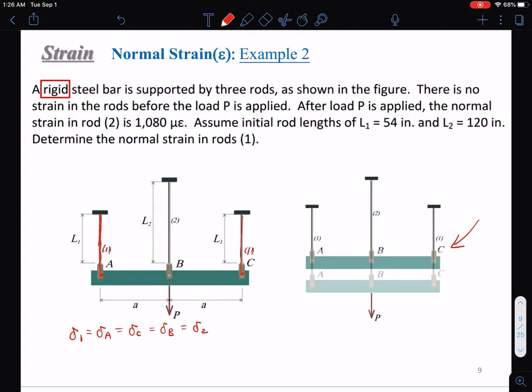If bar ABC is always parallel with its original position, the elongations of these three bars and the displacement of points ABC will always be the same.